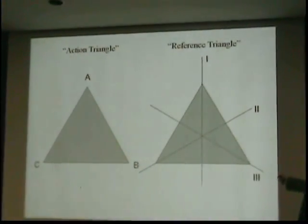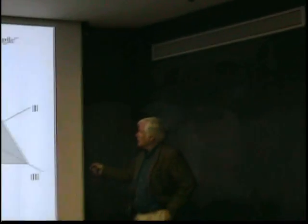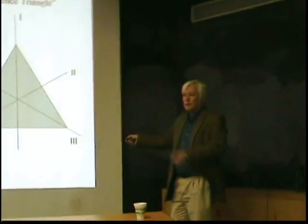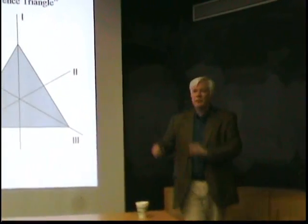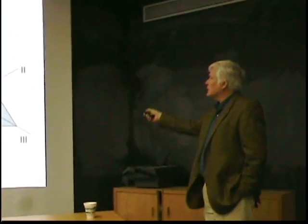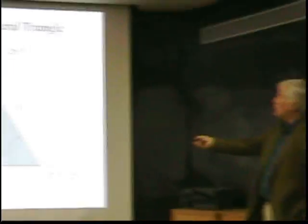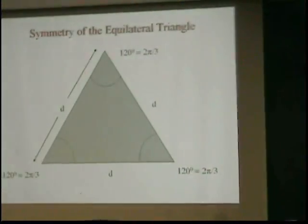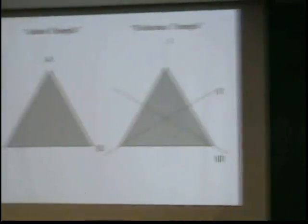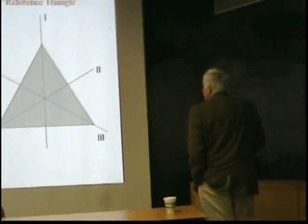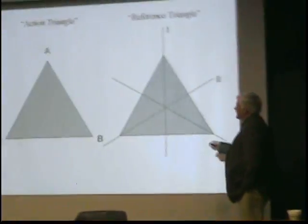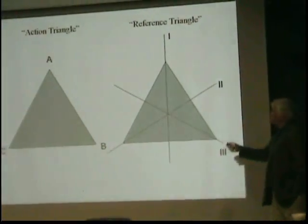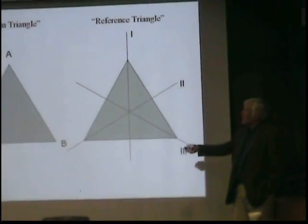So I'm going to start with a triangle that I'll call a reference triangle, and I'll imagine I've glued it down on maybe a table or something. And I've given it what I call axes one, two... By the way, I threw that in to see if you were awake. I obviously wasn't when I made that transparency. So here's my reference triangle and axes one, two, and three. And here's an action triangle.